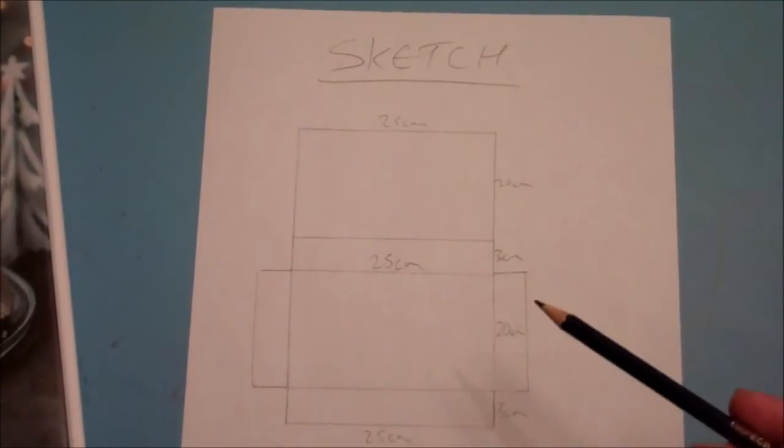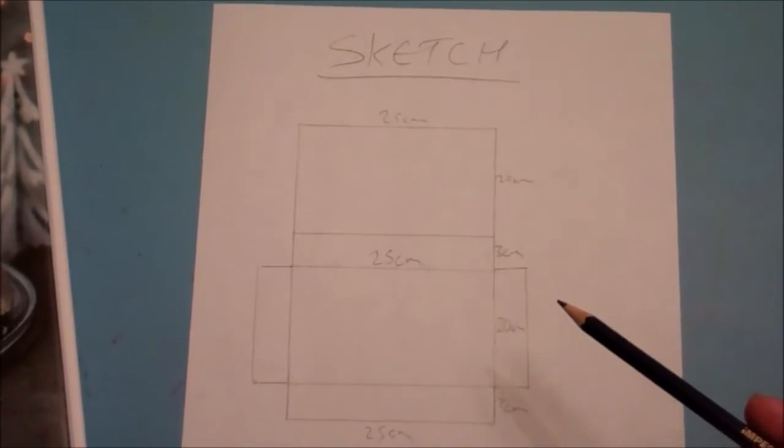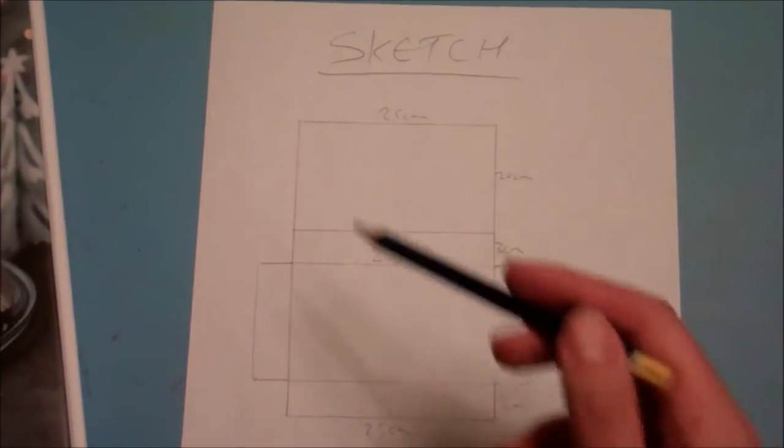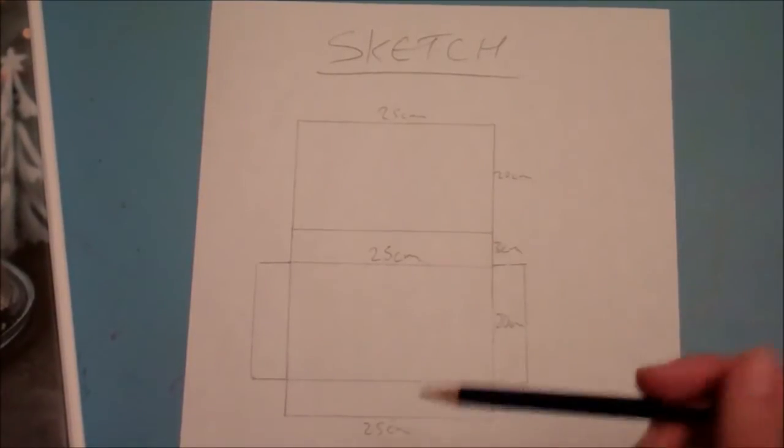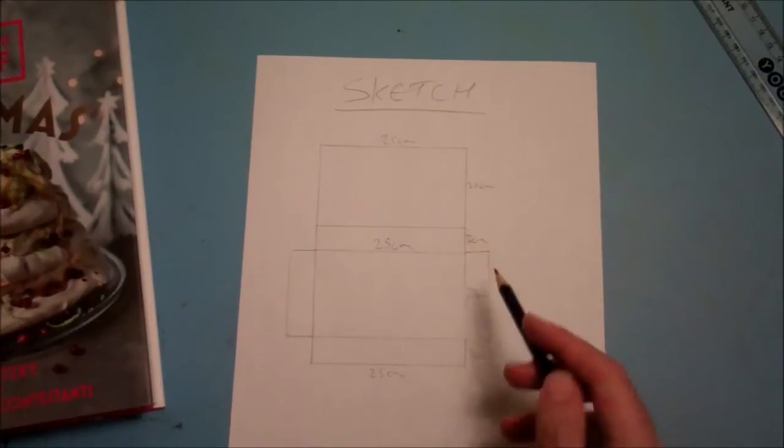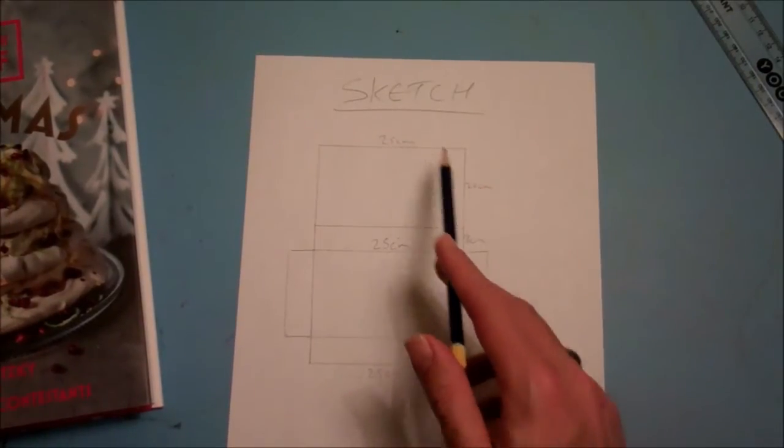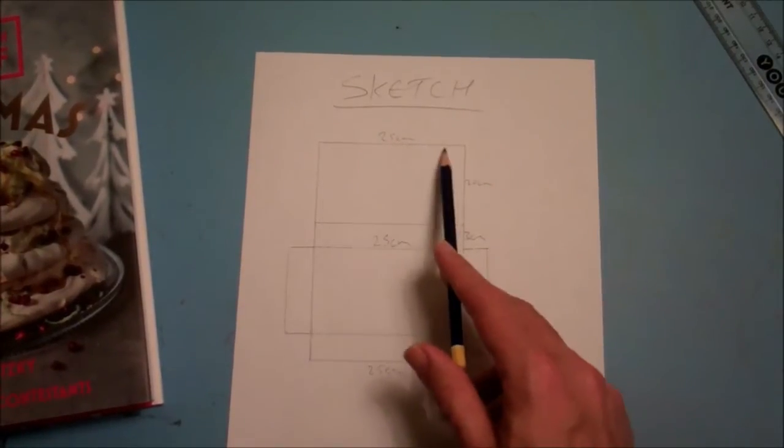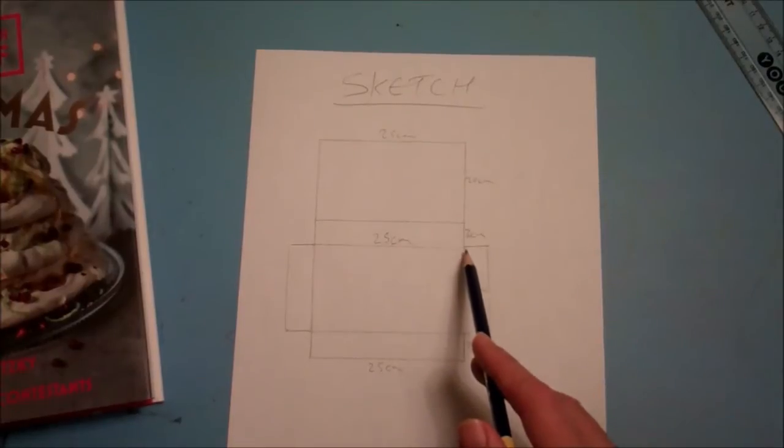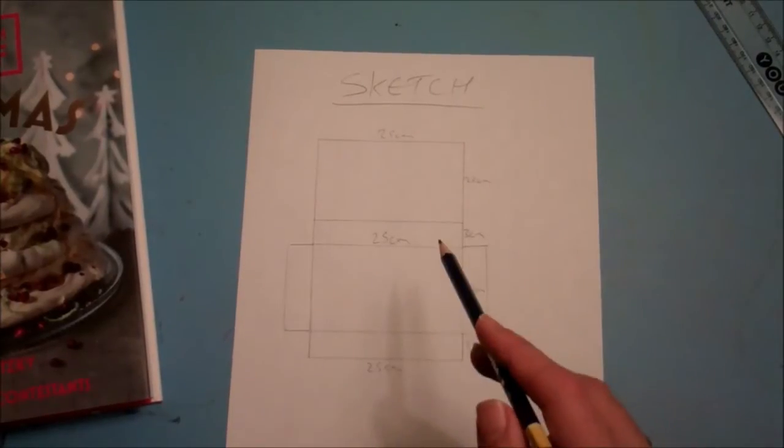Right then, so what I've done is sketched out the net of this, and what I mean by that is I've not measured this at all on the paper. I've just drawn the rectangles that I know the book as I unfold it would be, and then I've actually put the accurate measurements that I've taken. So that's 25cm, 20cm and 3cm, and they're the only three measurements I need.